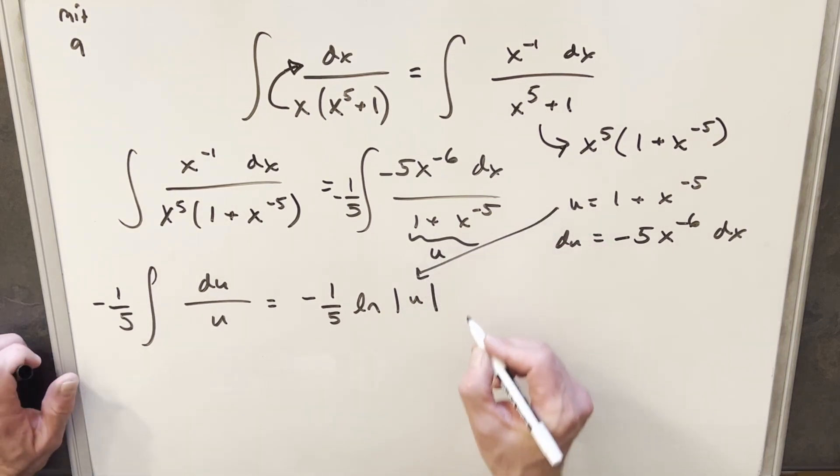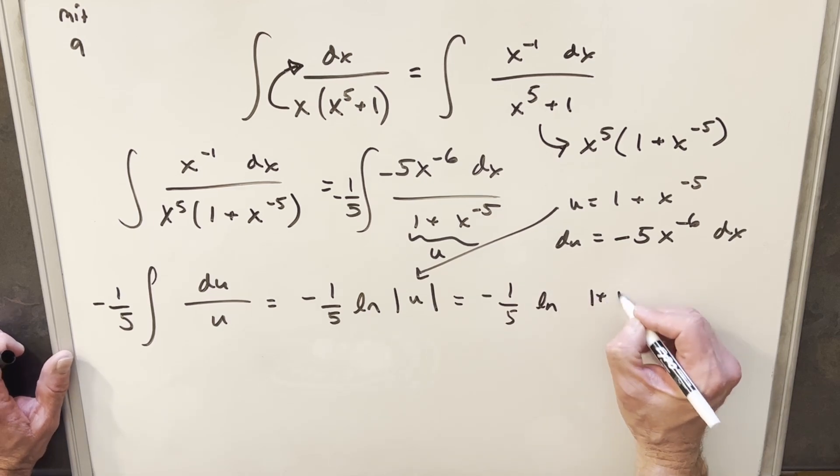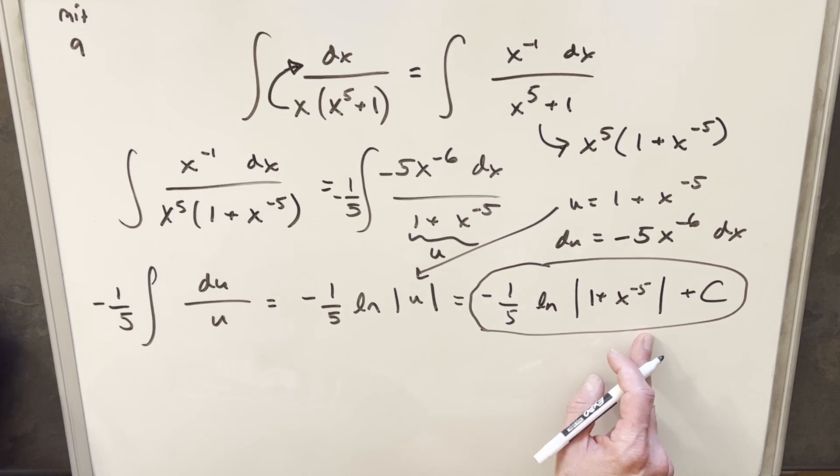But then I can just back substitute here. We're going to have minus 1 over 5 natural log 1 plus x minus 5. So I think this is perfectly fine as an answer, but what I'm going to do is I'm just going to manipulate it a little bit to get it into the same form that MIT had it.